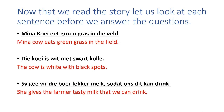Now that we read the story, let us look at each sentence before we answer the questions. Mina Kui eet groen gras in die veld — Mina Kau eats green grass in the field. De Kui is wit met swart kolla — the Kau is white with black spots. Sy gee vir die boor lekker melk, so dat ons dit kan drink — she gives the farmer tasty milk that we can drink.